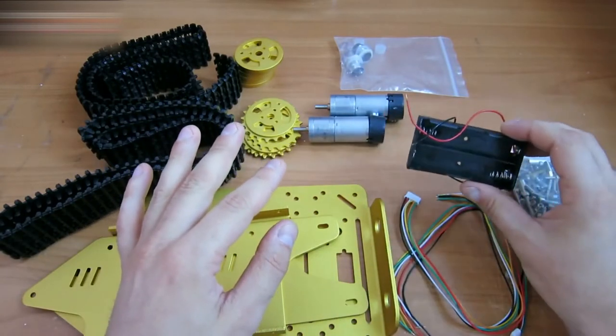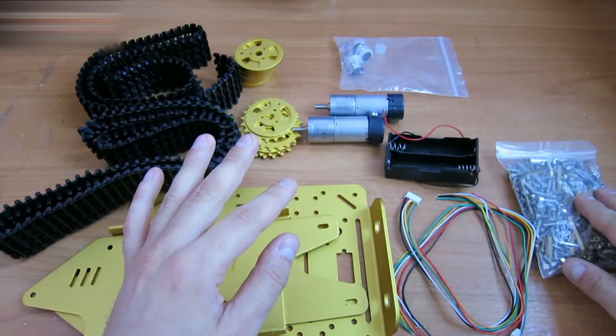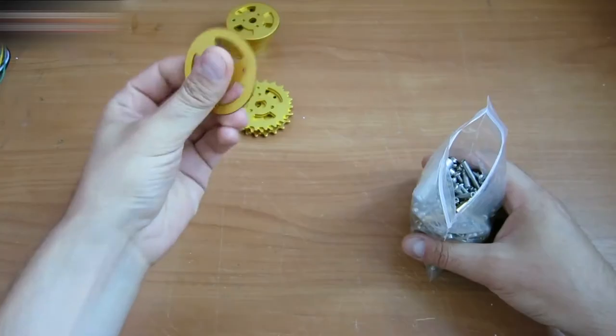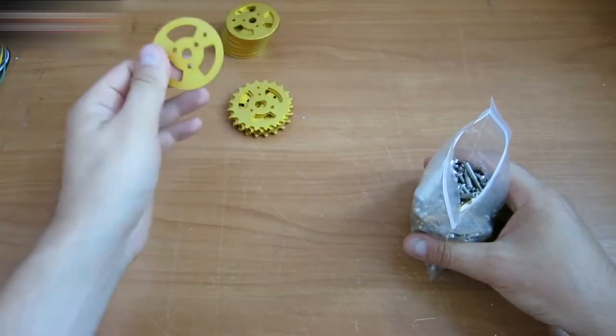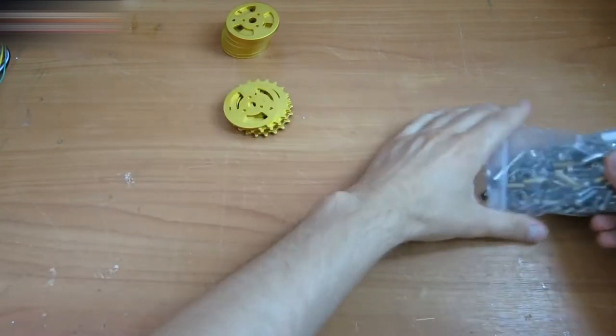These are the elements of the machine. Here is the compartment for two batteries and here we have a whole bunch of different nuts and bolts. By the way, if you don't like the gold color, you can buy this model in a silver color.